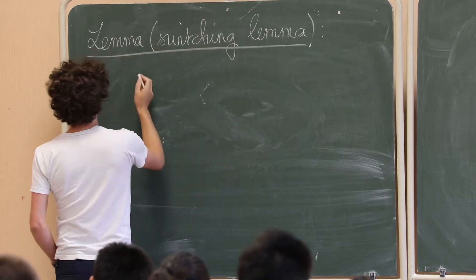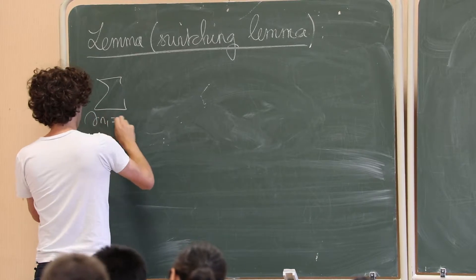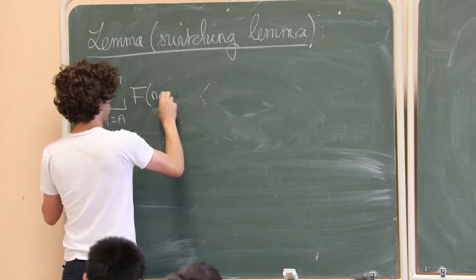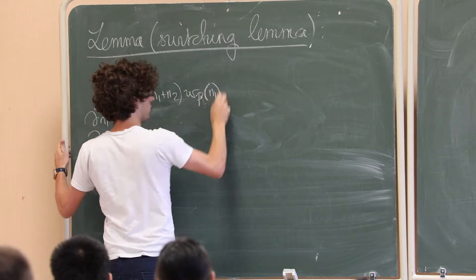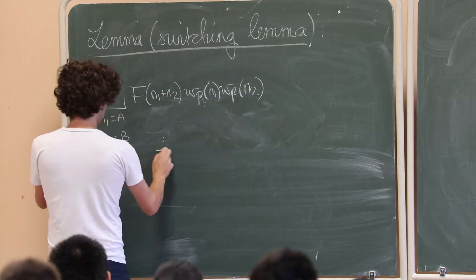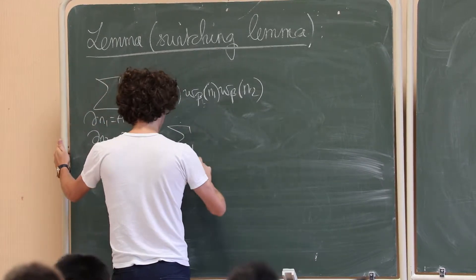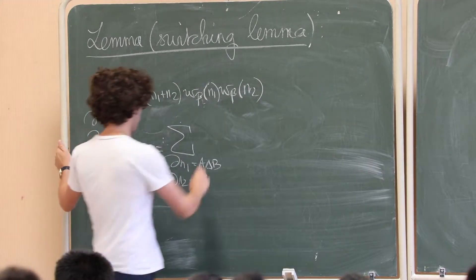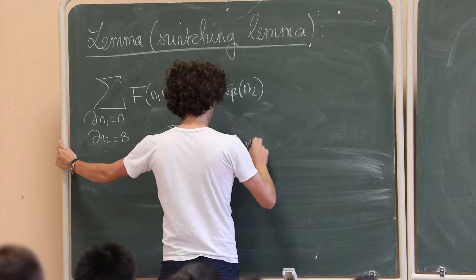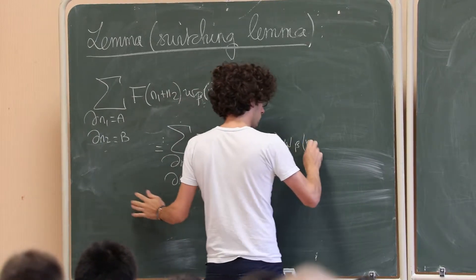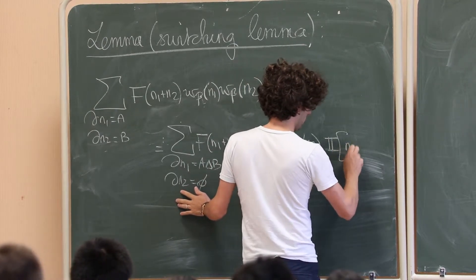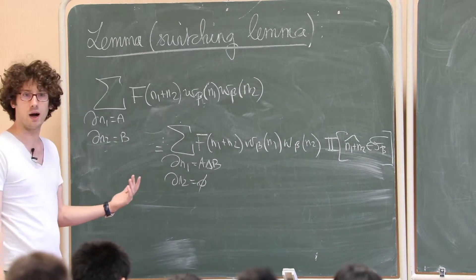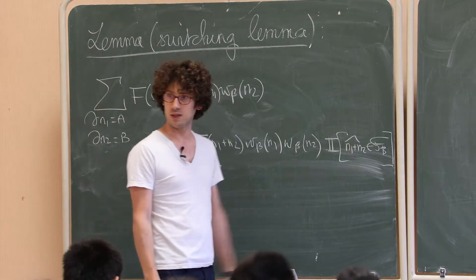So the switching lemma says that the sum over two currents — one with sources A and one with sources B — of f(n1+n2) · w_β(n1) · w_β(n2) equals the same sum where all sources are on the first current, of f(n1+n2) · w_β(n1) · w_β(n2), except we add the indicator function that the trace of n1+n2 is in F_B. Thinking of B as {x,y}, we need x connected to y in n1.